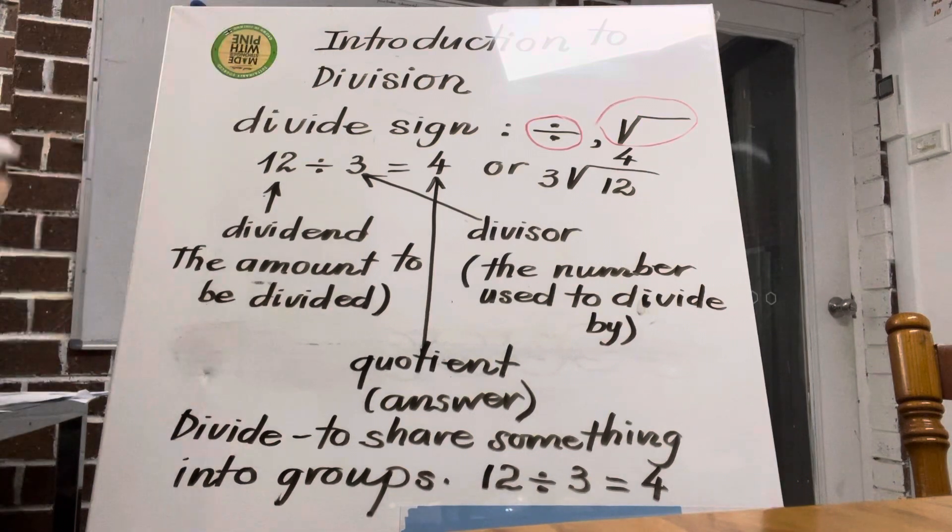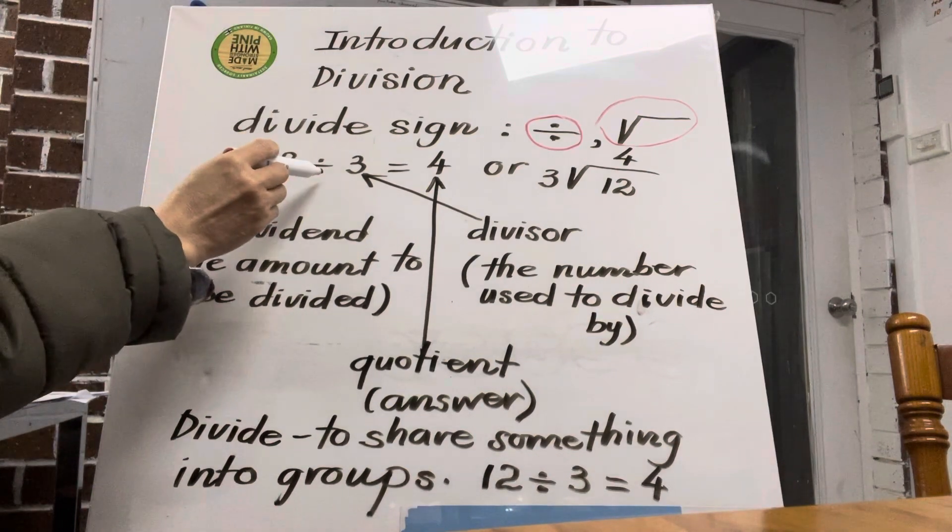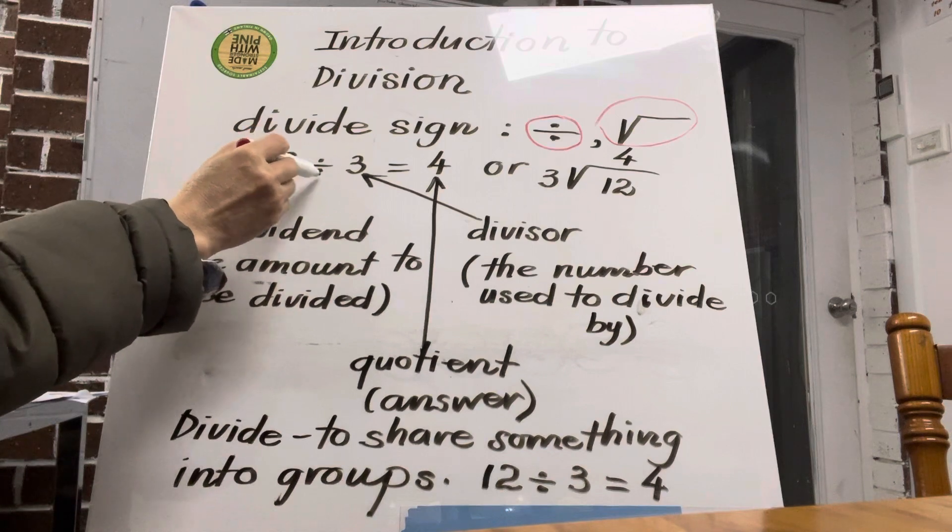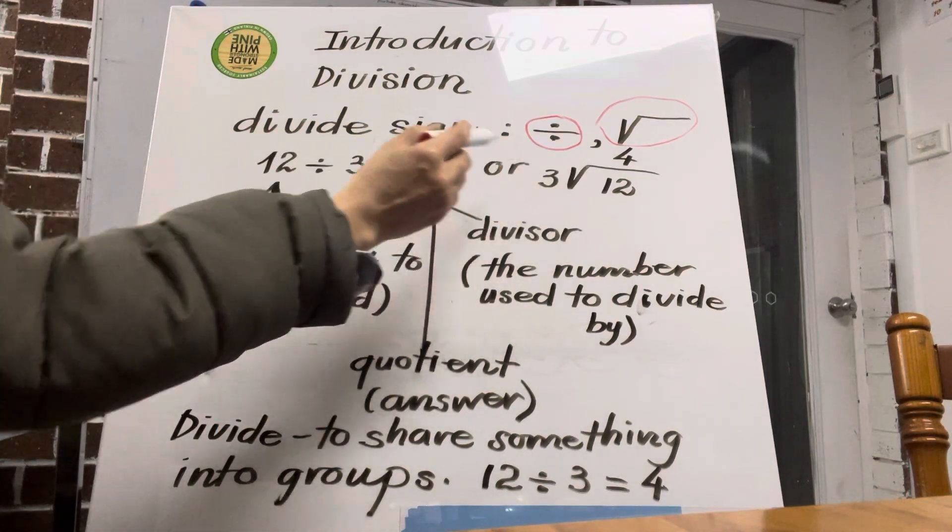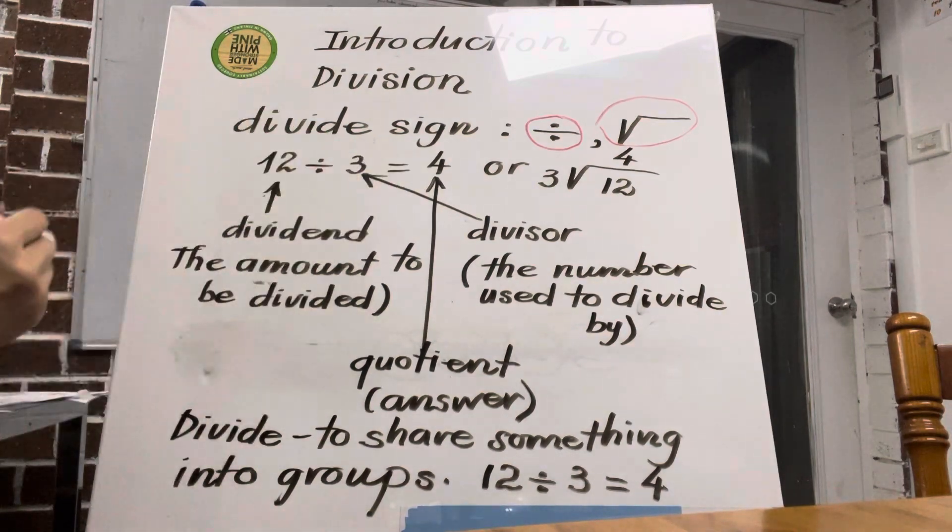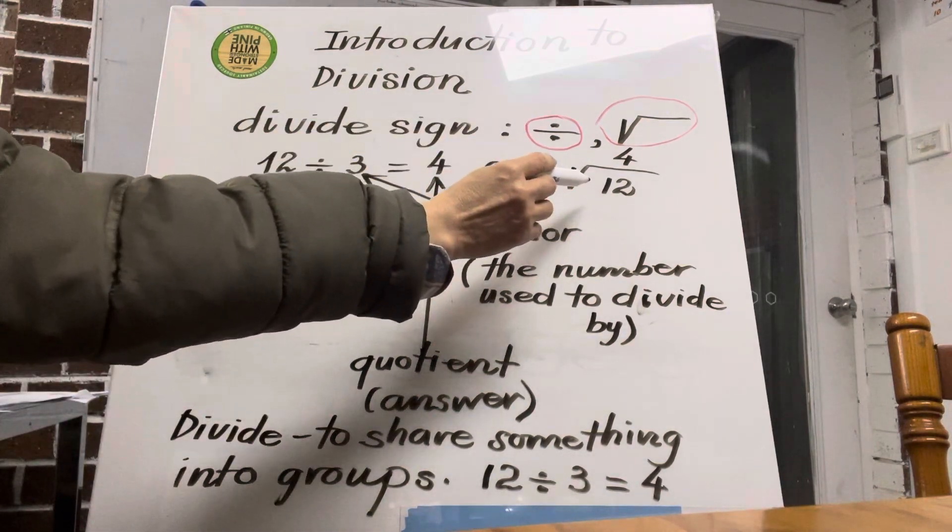So we can write division in two ways: 12 divided by 3, or 12 divided by 3. And where do you write the answer? This one you write after the equal sign, and this side you write on top of the dividend, yes.